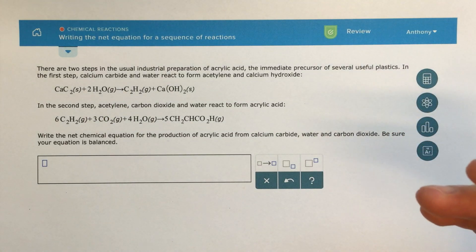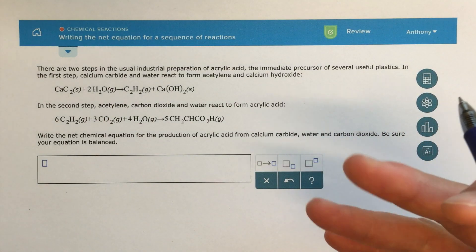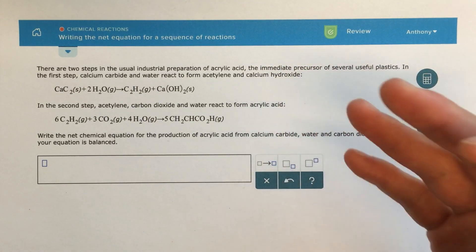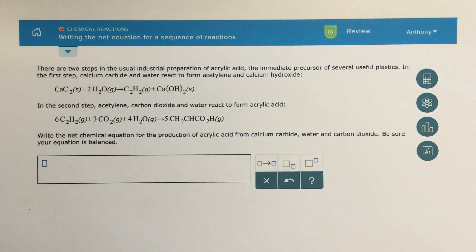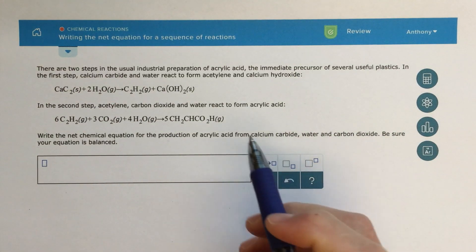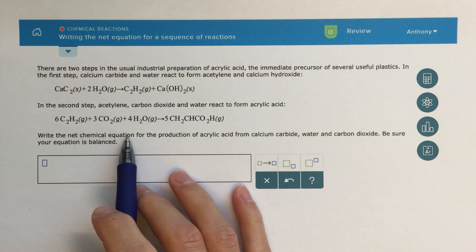We're not often going to have just one chemical reaction, there's going to be a series of chemical reactions that will happen, and we're going to be interested in what happens overall. So in this question here, we're asked to basically write the net chemical equation.